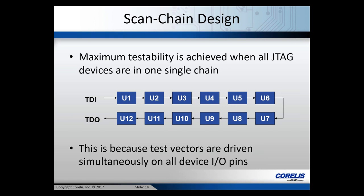The scan chain is probably the most important piece for maximum JTAG testability. Maximum testability is achieved when all JTAG devices are in a single chain. Each device has TDI, TDO, TMS, and TCK pins. The TDO of the first device connects to the TDI of the second device, and so on down the line. TMS and TCK signals are routed in parallel to all devices since the tools communicate with all devices simultaneously — think of TCK and TMS as broadcast signals.